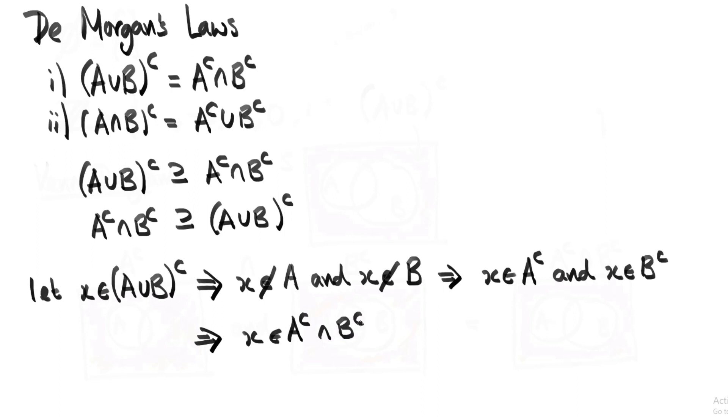Because x represents any element in A union B complement, that means that every element in A union B complement is inside A complement intersection B complement. So A union B complement is a subset of A complement intersection B complement. So we've proved the second of the bottom two statements, and now we need to prove the first of them. Then we'll have proved the first of De Morgan's laws. And then we have to do the same thing for the second one.